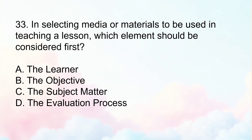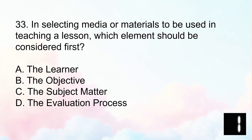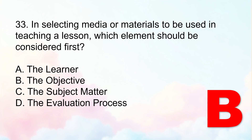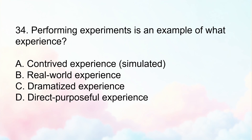Number 33: In selecting media or materials to be used in teaching a lesson, which element should be considered first? Letter A, the learner. Letter B, the objective. Letter C, the subject matter. Or Letter D, the evaluation process. The correct answer is Letter B, the objective. In instructional planning, especially when selecting media or materials, the learning objective is the first and most essential element to consider.